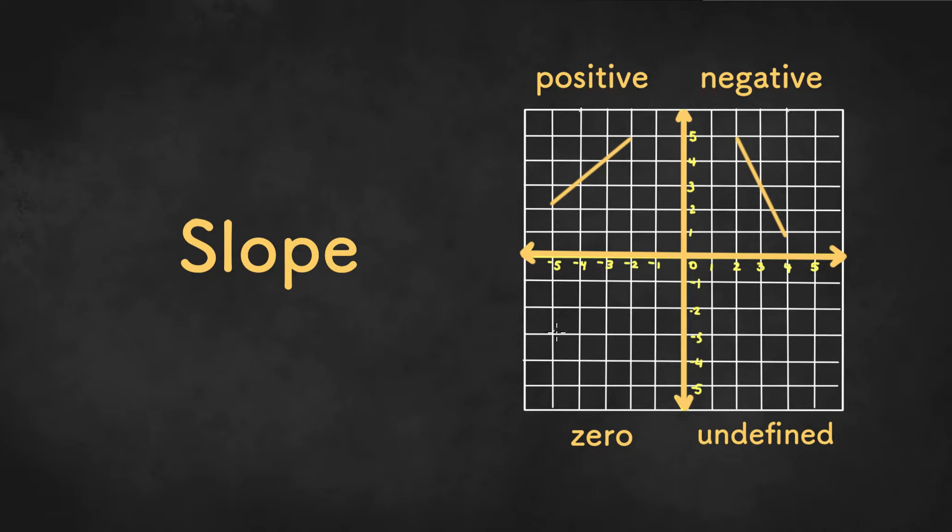Zero slope is a flat horizontal line, and then undefined is a vertical line.